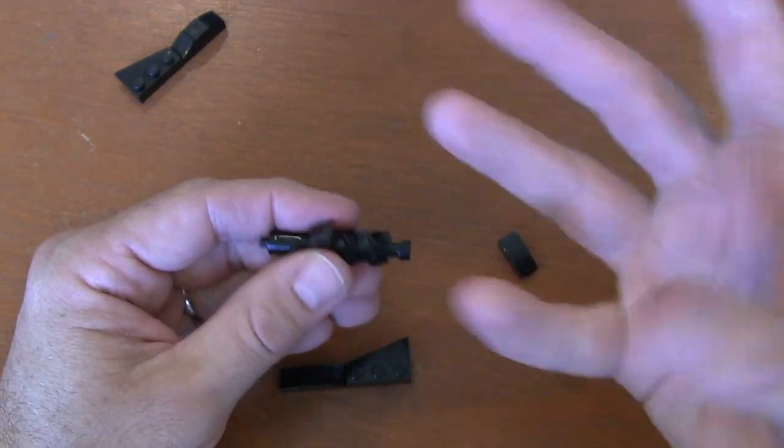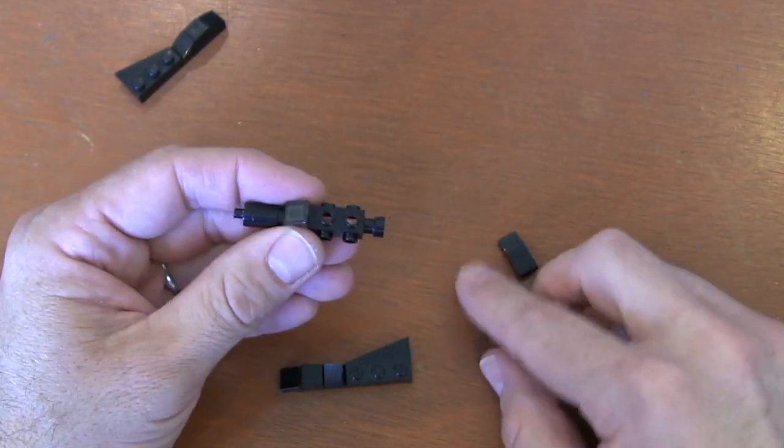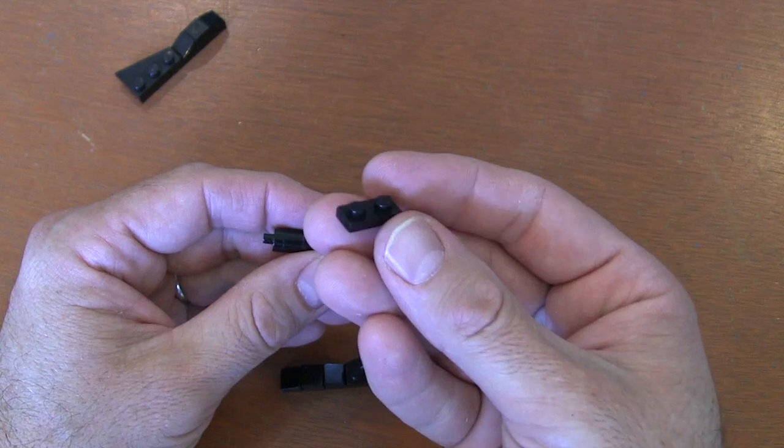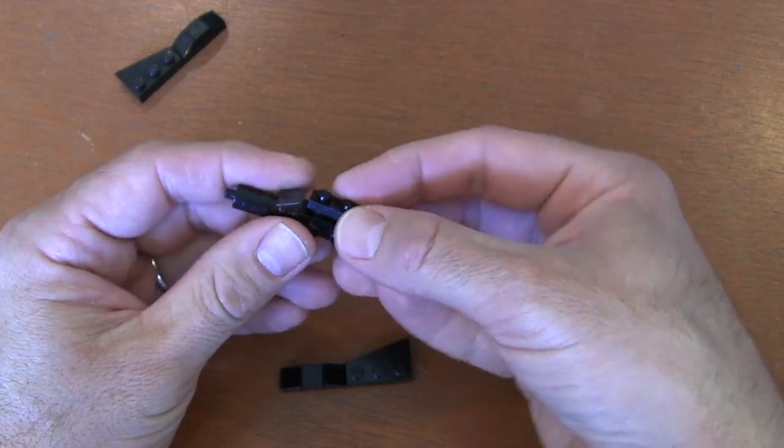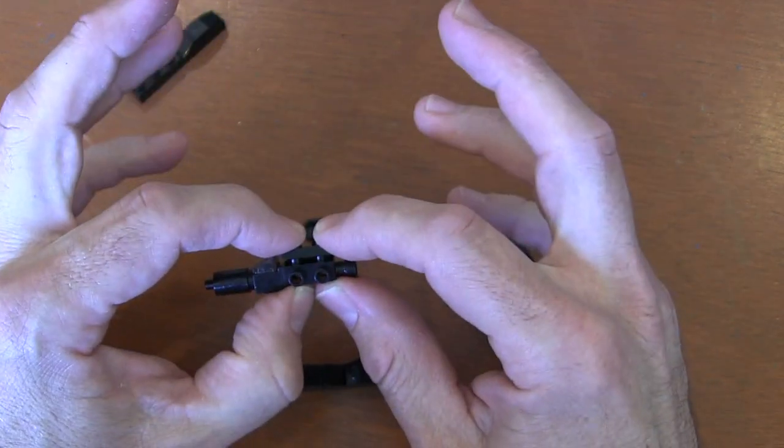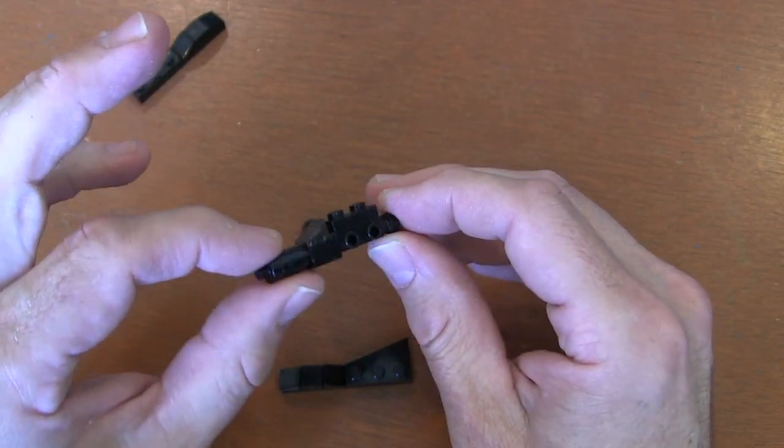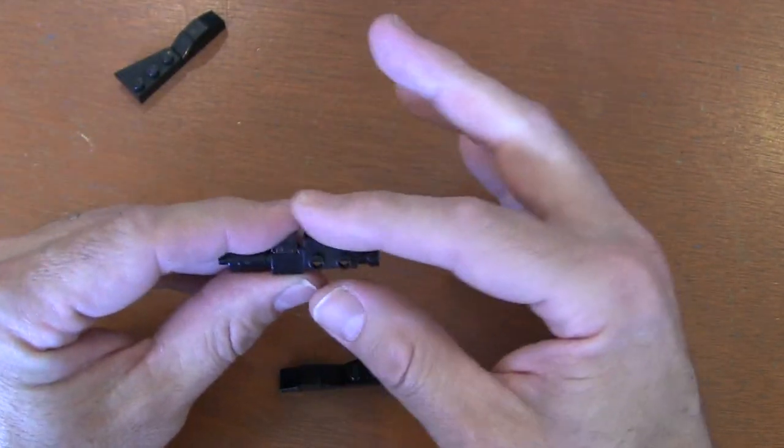Then to do the back end where they all sit and the gadgets are stored, I'm going to grab a 1x2 plate piece. This is going to build up my brick. I'm going to put that 1x2 plate piece on top of my 1x2x2/3 brick to even it out here.